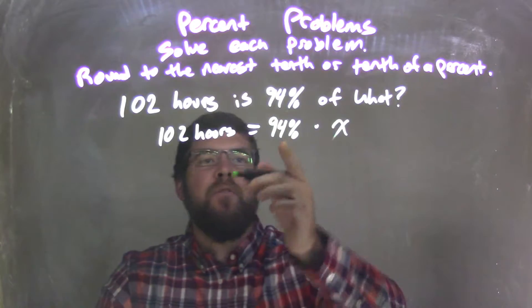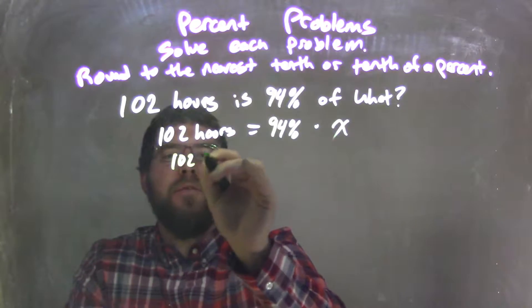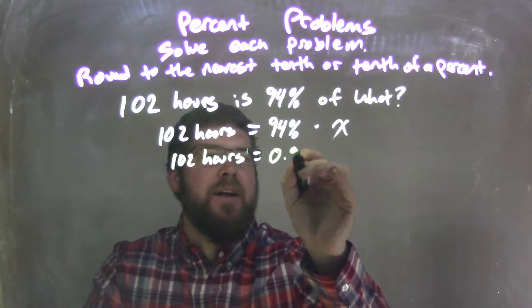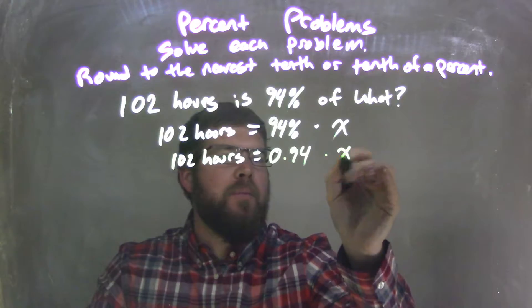First thing, I need to convert that percent to a decimal. So I have 102 hours equals 94%, 0.94 as a decimal, and that's being multiplied by X.